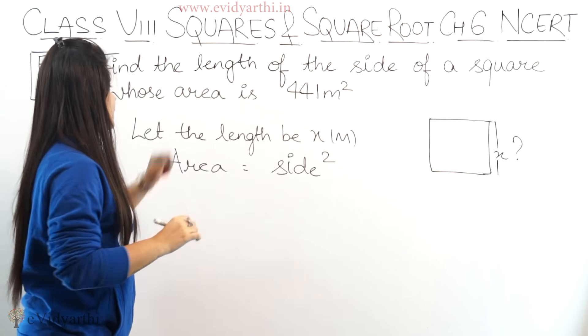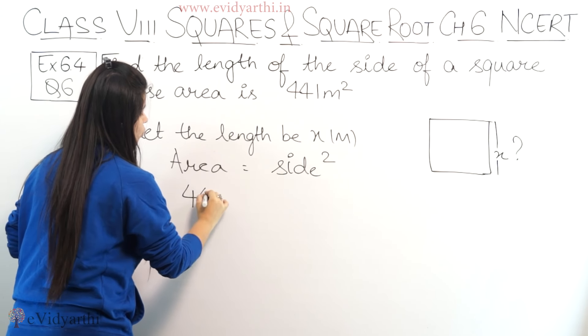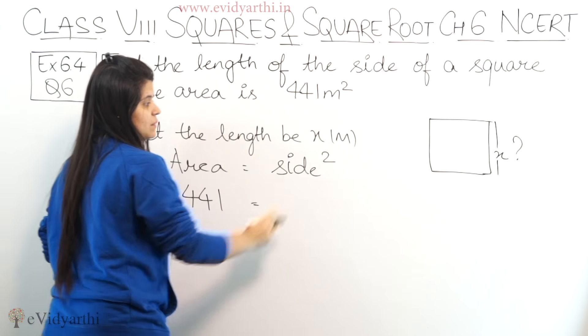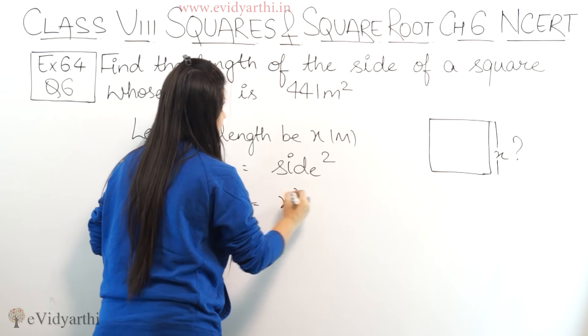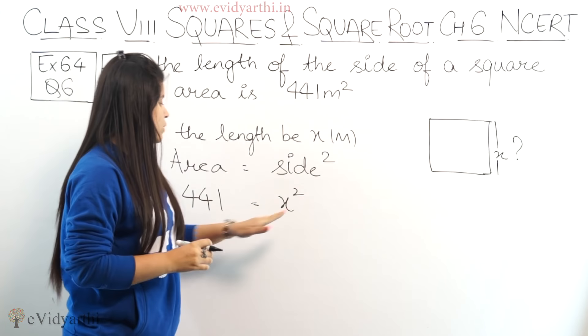Right? So area is given to us as 441, and side we have taken as x. So means x square equals to 441.